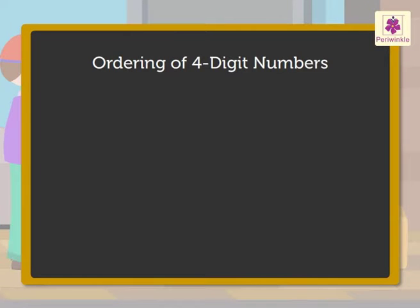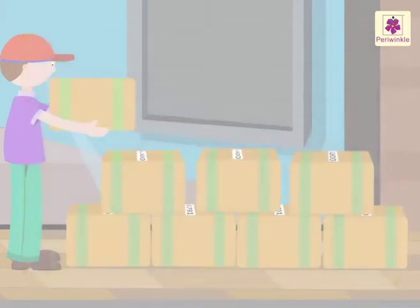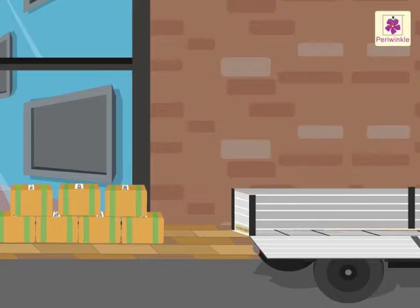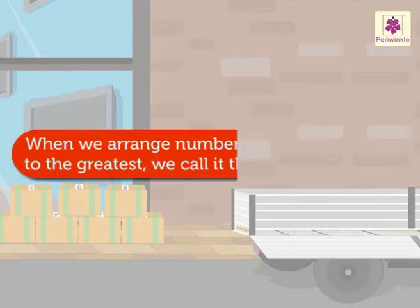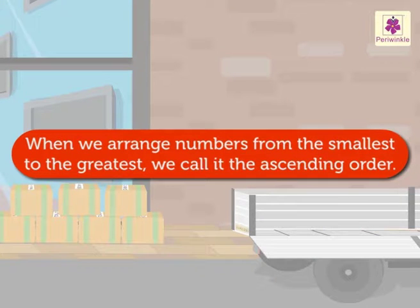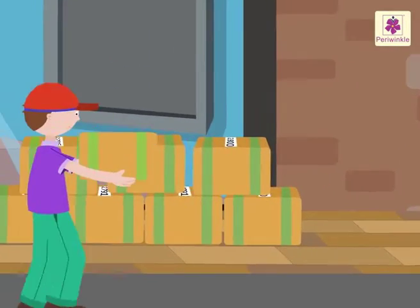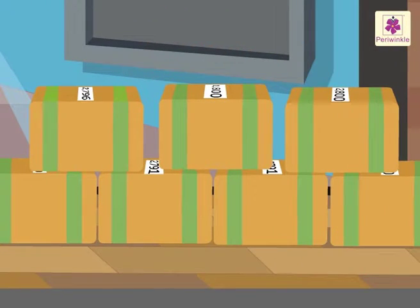There are two orders in which we can arrange a set of numbers: the ascending order and the descending order. Let us revise both orders today. When we arrange numbers from the smallest to the greatest, we call it the ascending order. Look at the boxes — they have some numbers. Let us arrange them so that we can deliver fast.